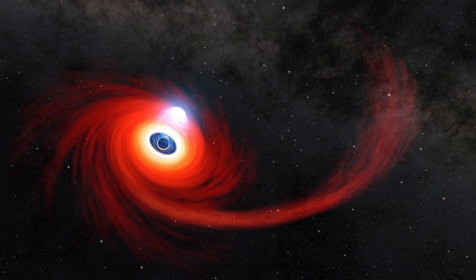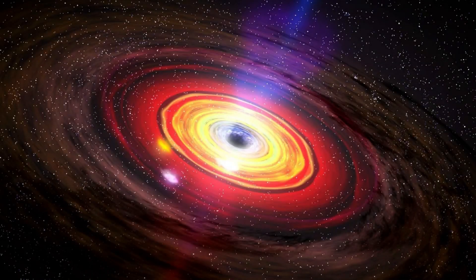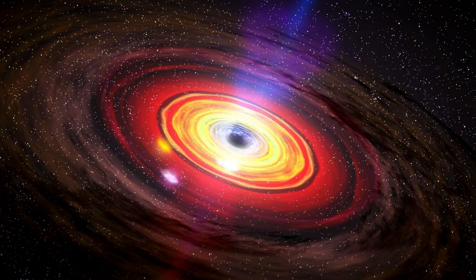A supernova is a massive explosion that occurs when a massive star reaches the end of its life cycle. During a supernova, the outer layers of the star are expelled into space, while the core collapses into a black hole if it meets the necessary mass criteria.